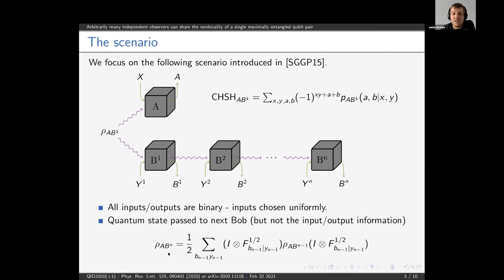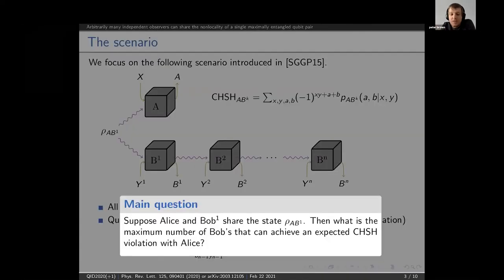This means that we can compute the shared state between Alice and Bobn via the shared state between Alice and Bobn minus one, averaged over Bobn minus one's POVM elements. The main question we want to address is: given that Alice and Bob1 share some initial entangled quantum state, what is the maximum number of Bobs that can achieve an expected CHSH violation with Alice simultaneously?